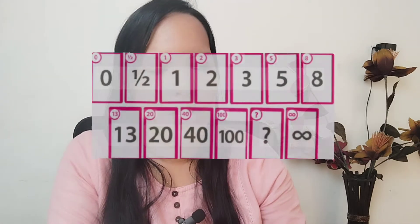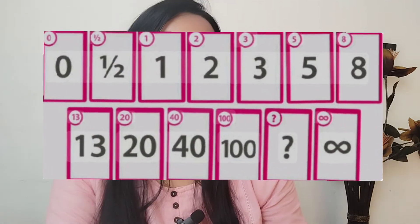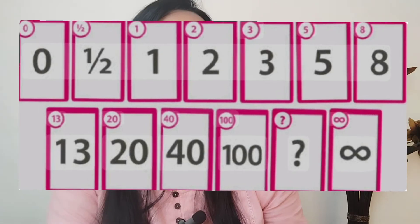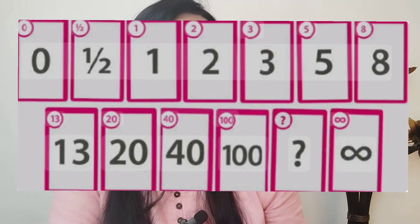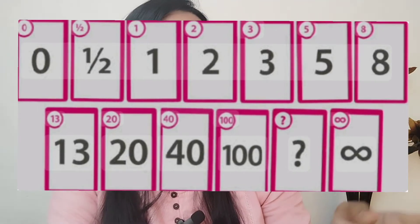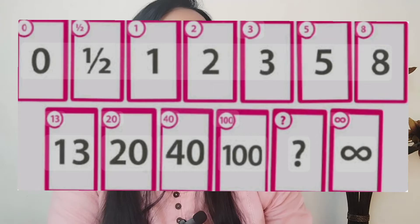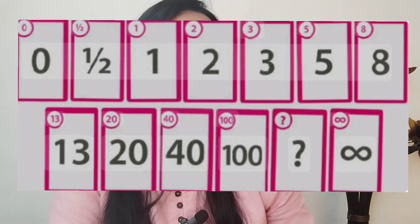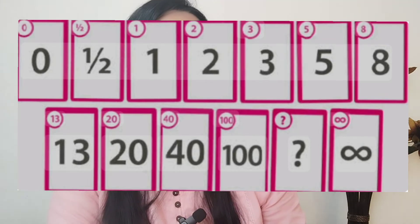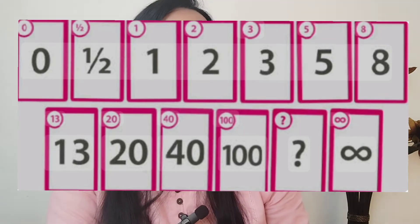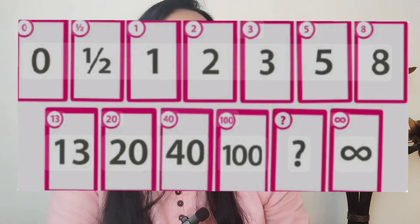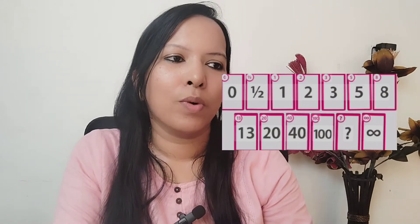For user story estimation, we use a modified version of this Fibonacci series that goes like 0, half, 1, 2, 3, 5, 8, 13 — so until 13 it's the same — and then 20, 40, 100, which are rounded-off numbers. You can see that half is added in between.